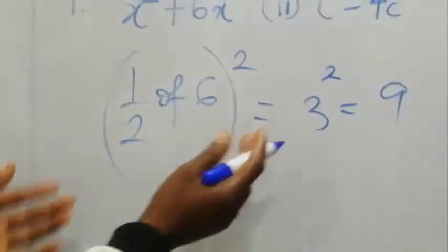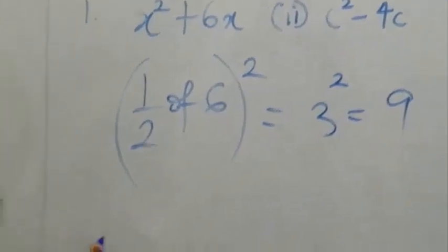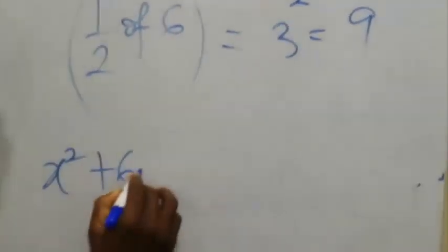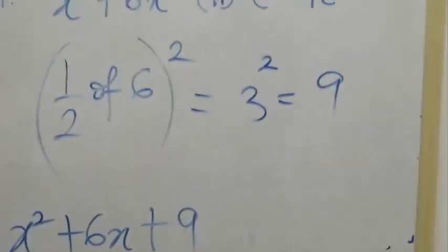Now, the number that needs to be added to this to make it a perfect square is 9. The expression will have x² plus 6x plus 9. Let's see another example.